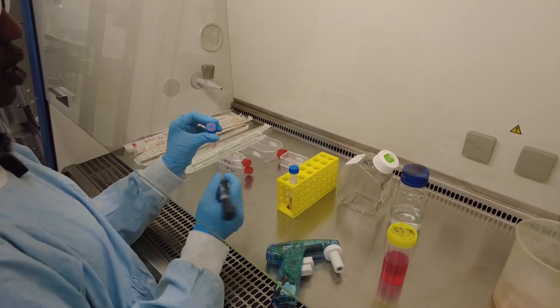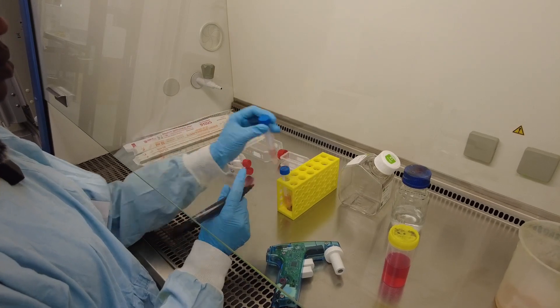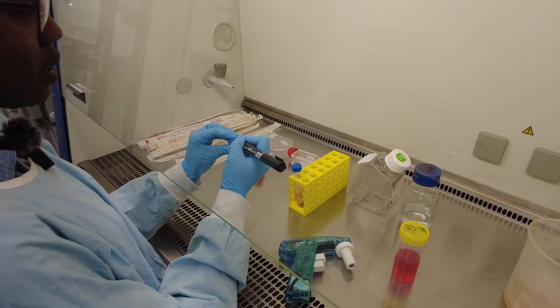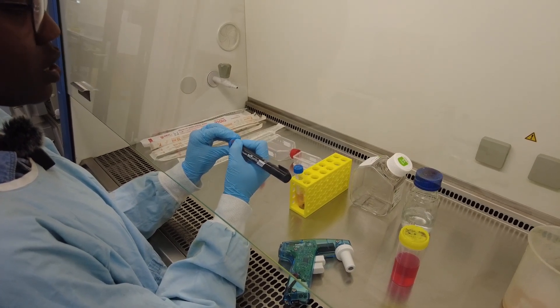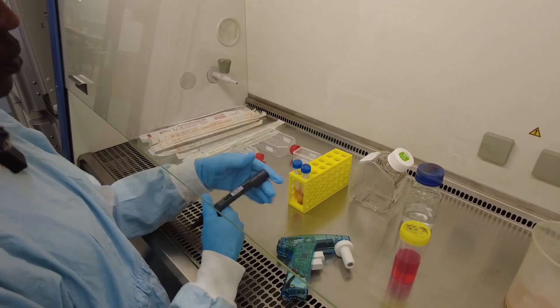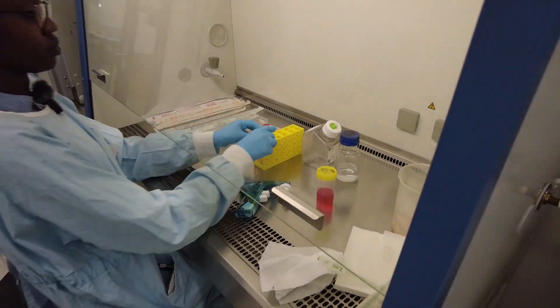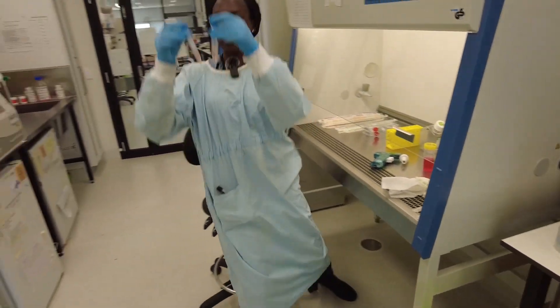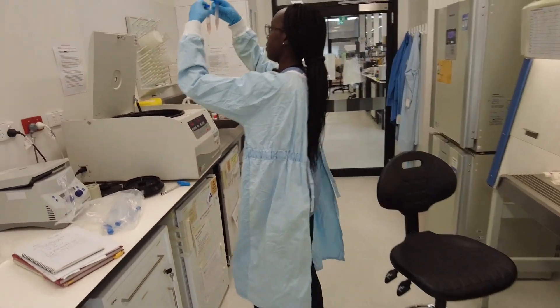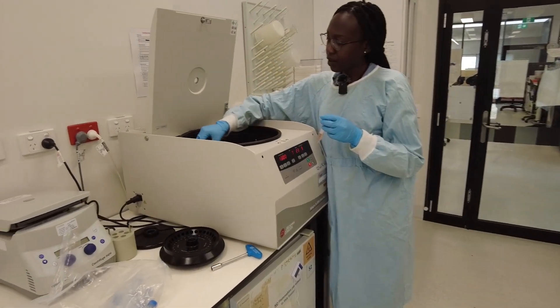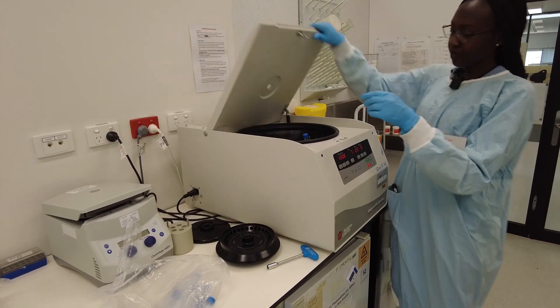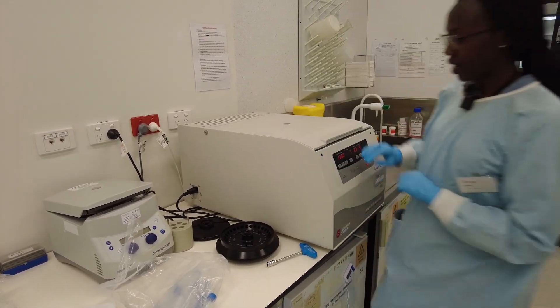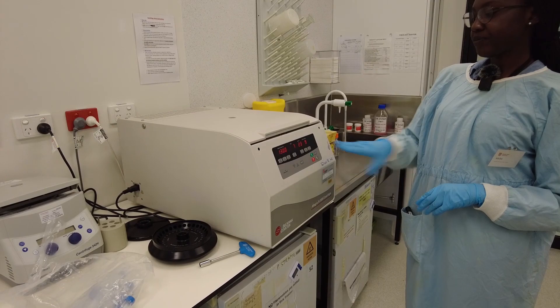So we'll call this tube number 2. And we'll call this one tube number 2. Now we're going to put them opposite to balance the centrifuge. Lock it in place and press start and we'll be back when the centrifuge is over.